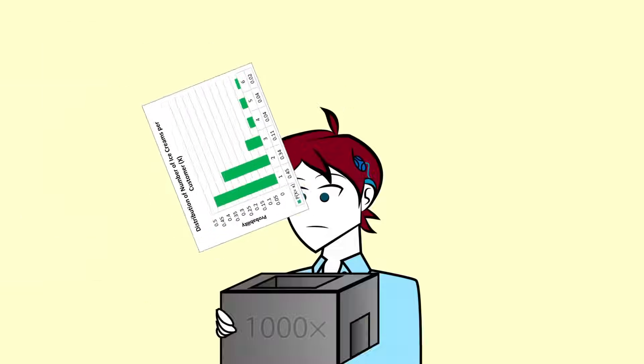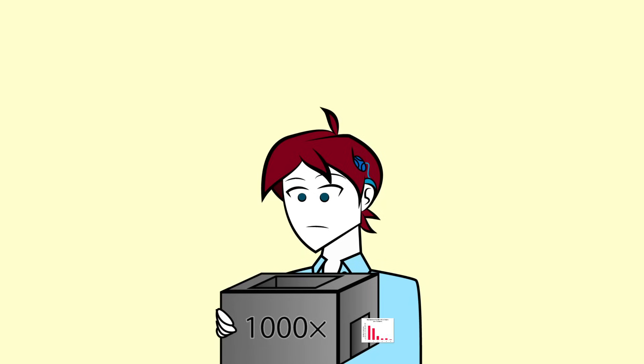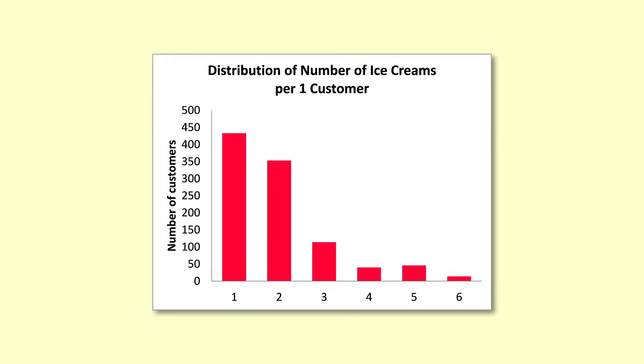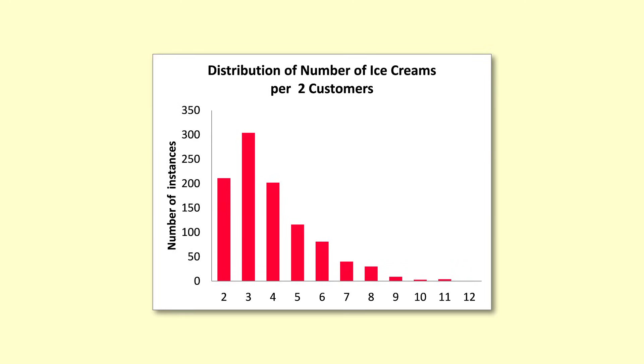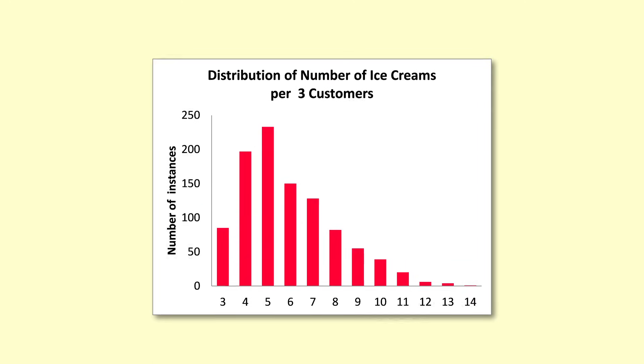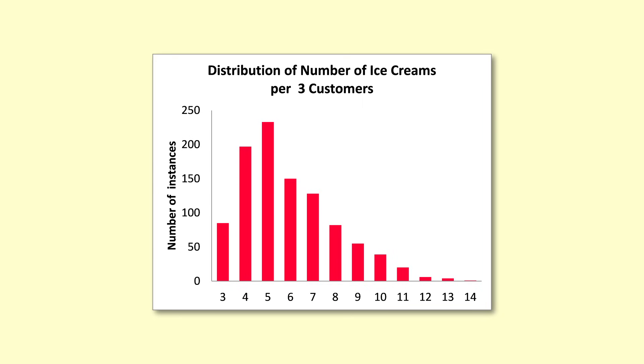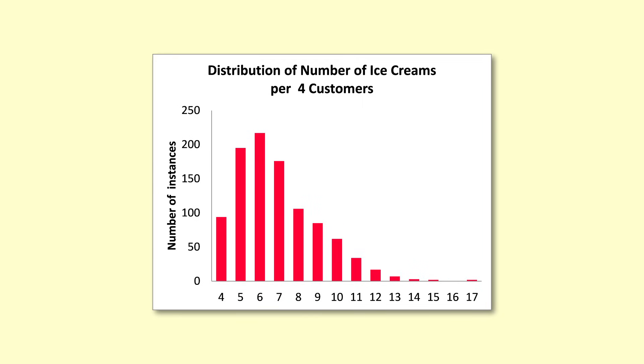We run a simulation of a thousand customers and see what the distribution looks like. It is similar to the original, as we would expect. Let's say we want to look at what one thousand lots of two customers buy. Or one thousand lots of three customers. Or four customers. Or ten.